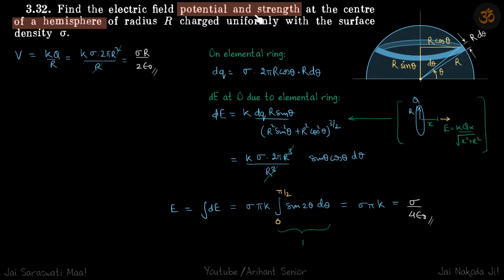We need to find the potential and strength of the electric field at the center of a hemisphere. We have a uniformly charged shell with surface charge density sigma. Don't get confused - it's a shell, not a solid sphere or solid hemisphere, so charge is only on the surface. We need to find the field and potential at the bottom.